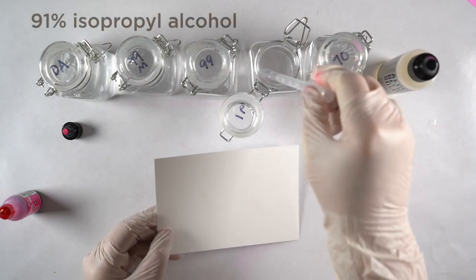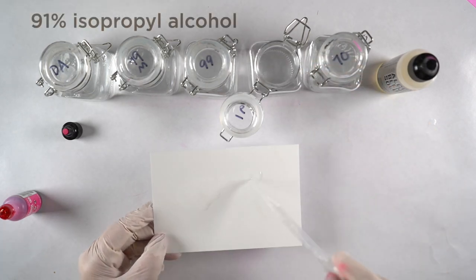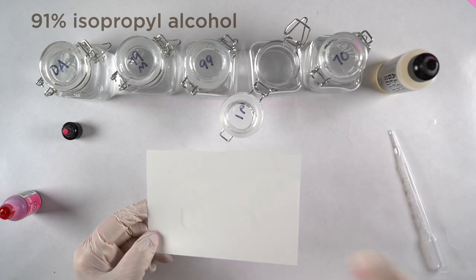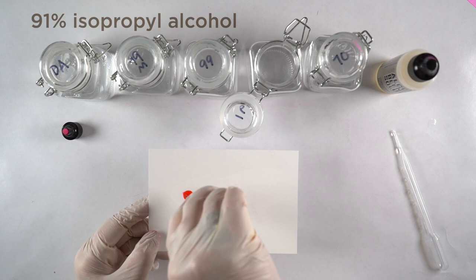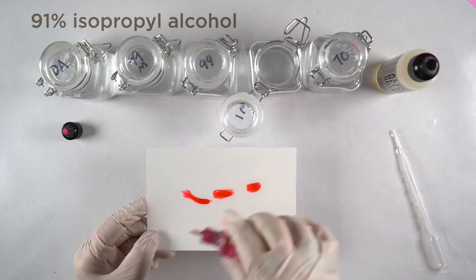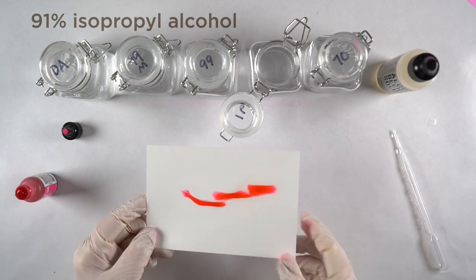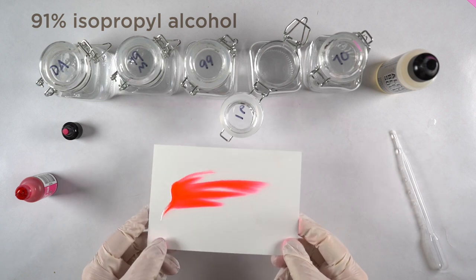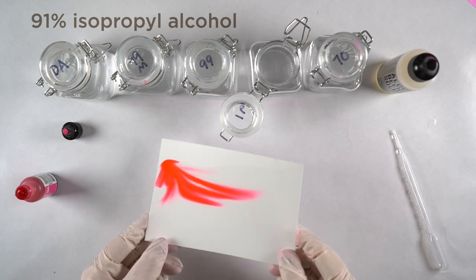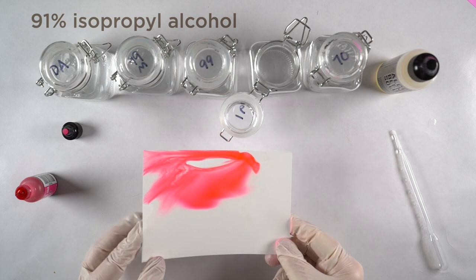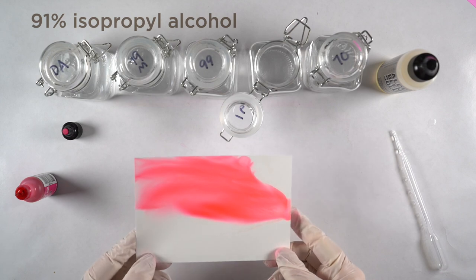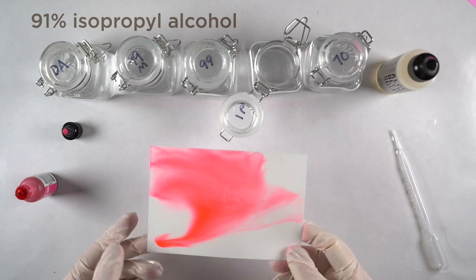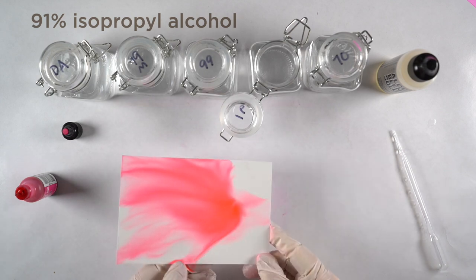Next up is the 91%, and as opposed to the 27 minute waiting time for the 70% alcohol, this one only took 9 minutes and 51 seconds. So 10 minutes versus 27—the water content in this is a lot less. I also got a lot more of the swoopy type of texture as it moved across the page.